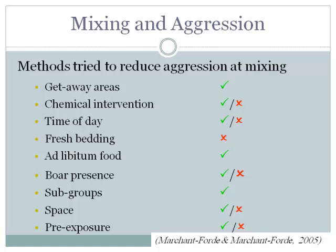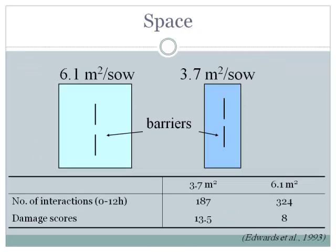Quite a lot of methods have been tried to decrease aggression at mixing — we wrote a review in Pig News and Information in 2005 listing many of them. Some work, some don't, some have mixed results. These involve elements of housing design, feed, super dominance, subgroups, space, and pre-exposure. I'm going to concentrate on these last two a little more.